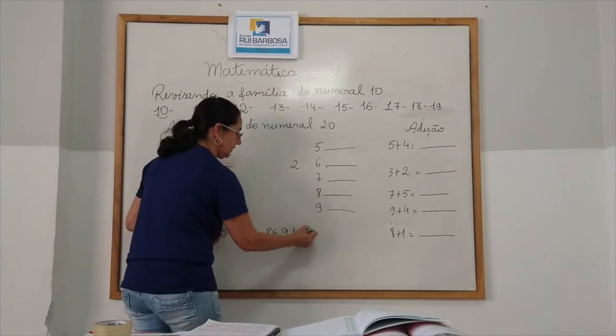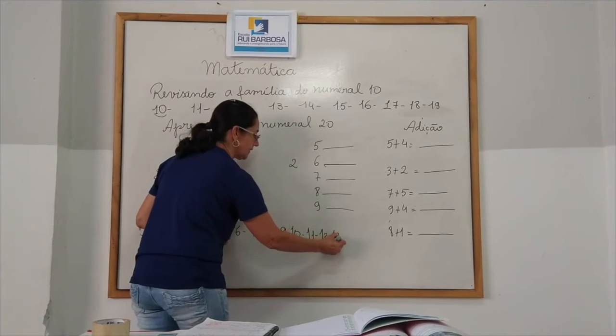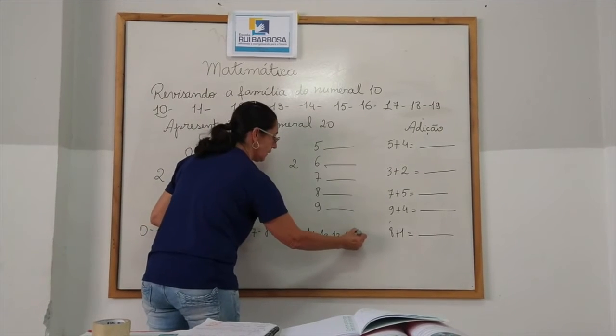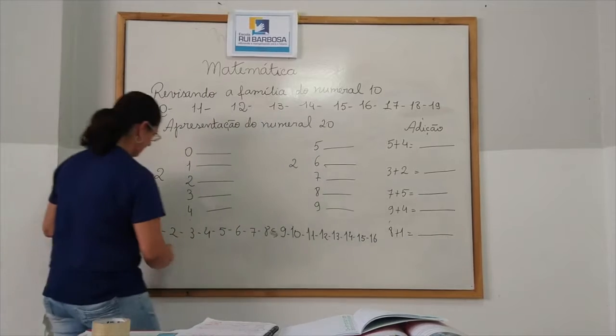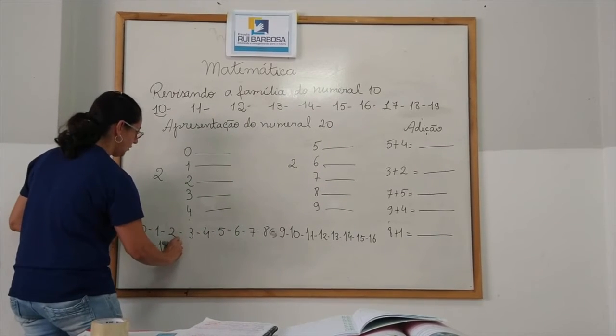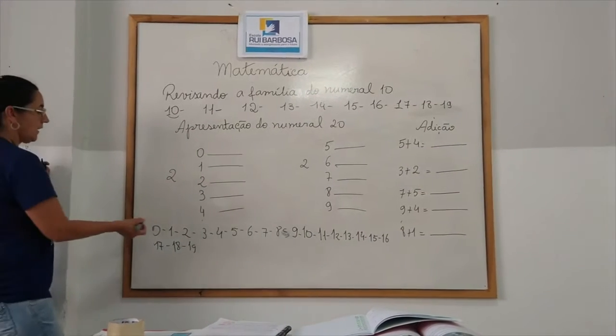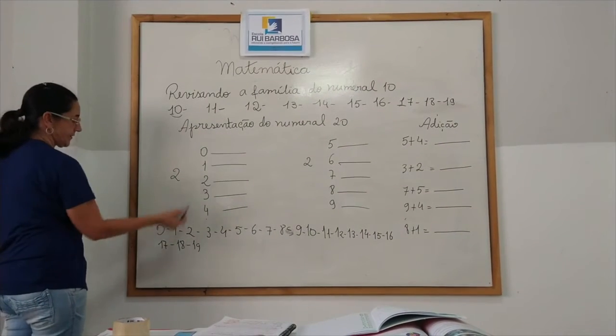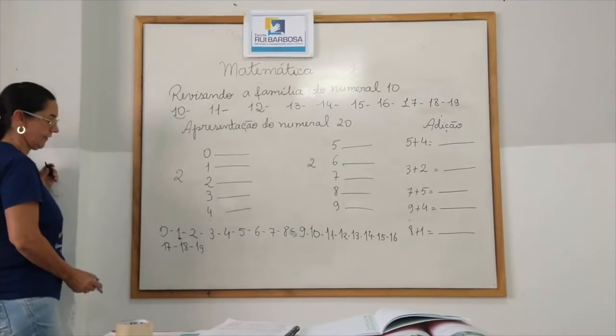Depois do 10. 11, 12, 13, 14, 15, 16, 17, 18, 19. Olha só que instante. A gente aprendeu a família do 10, que é formada pelo 1, que é o chefe.